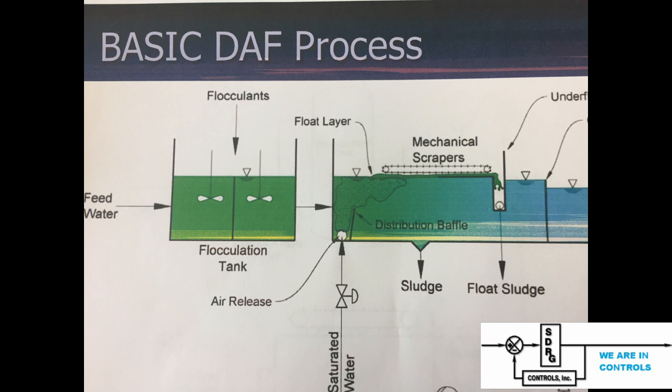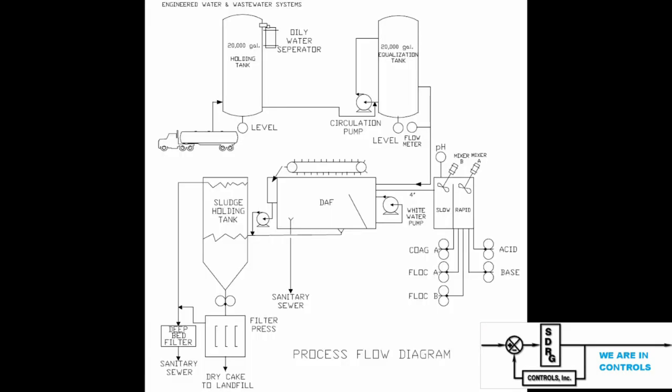Then the water could be processed by the local wastewater system if it met the local standards and requirements. We first start with a process flow diagram where we describe all the inputs to the system, where they're coming from, and all the outputs from the system, where they're going to.